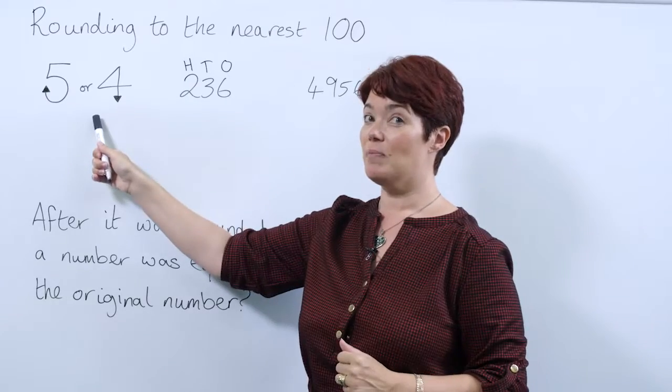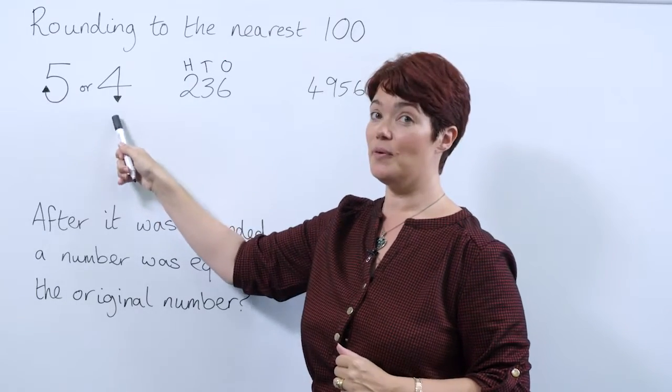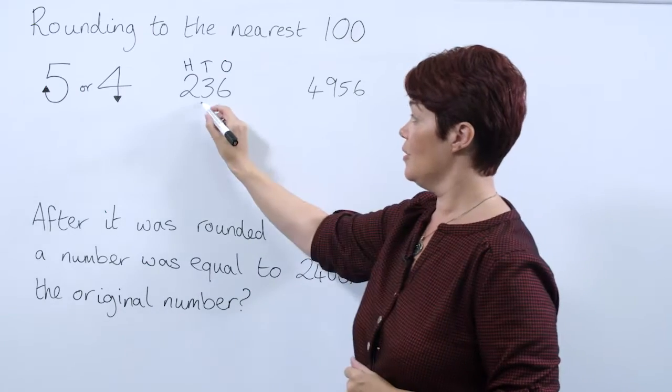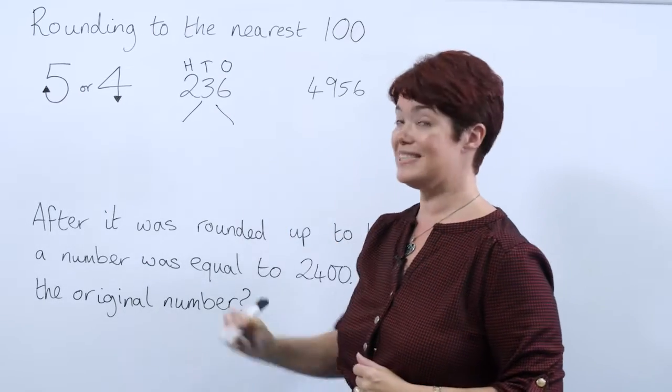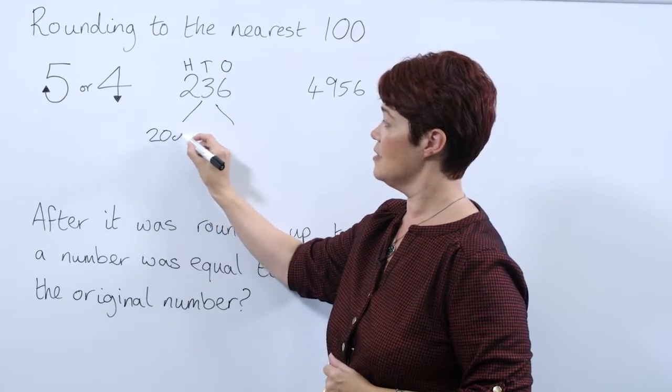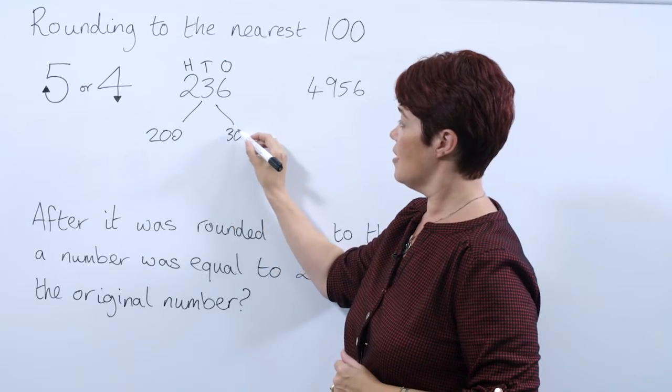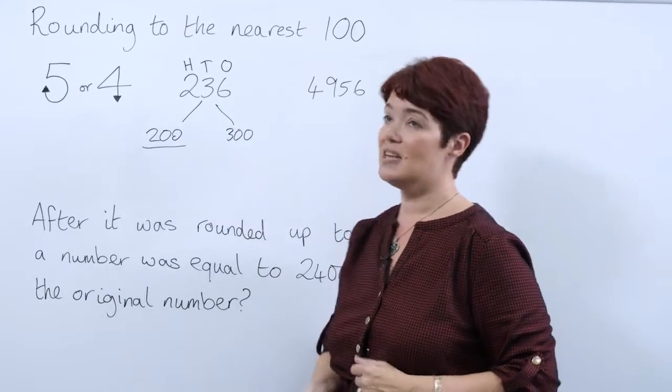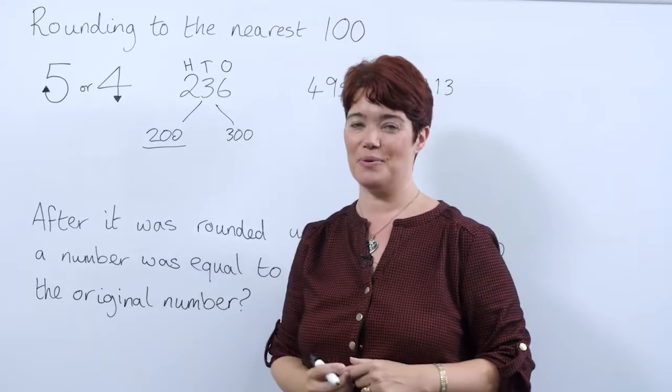Looking at our aid memoir, we can see it's below four, so we're going to round down. Using our knowledge of multiples of 100, we can see that 236 is between 200 and 300, and as we're rounding down, 236 to the nearest hundred will be 200.